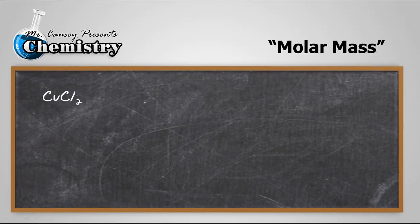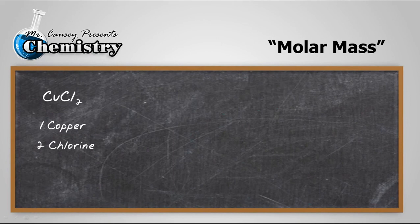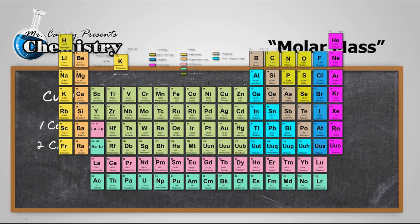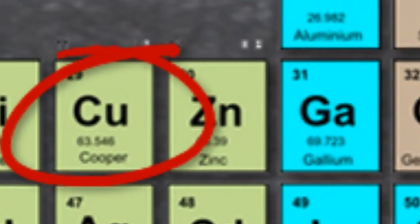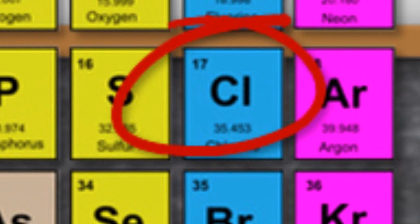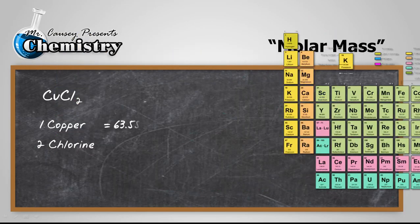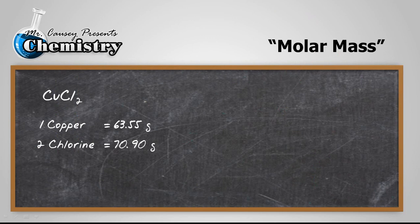The molar mass of copper(II) chloride: we have one copper and we have 2 chlorine. Let's go to the periodic table. At the periodic table, we have copper, and we have chlorine. All right, now let's just take their amounts and write them down on the blackboard.